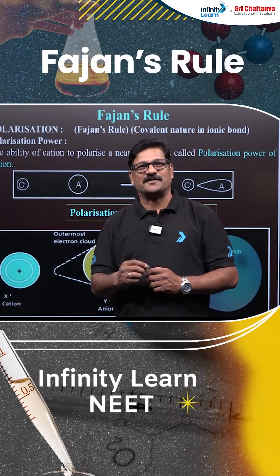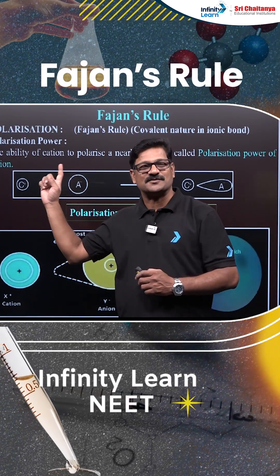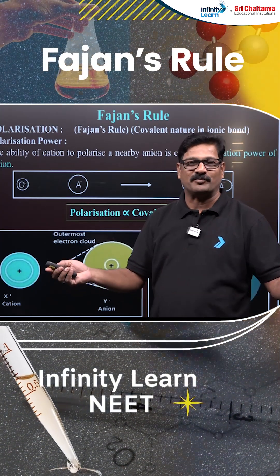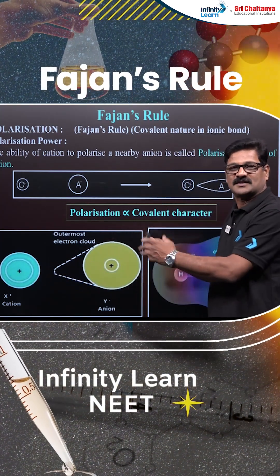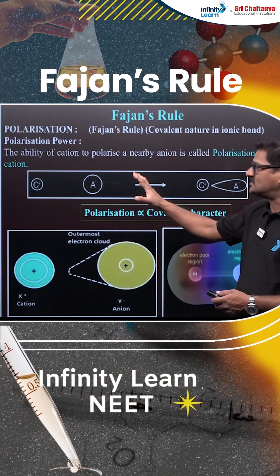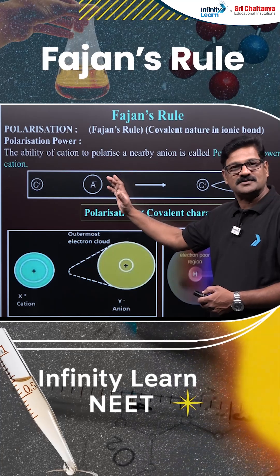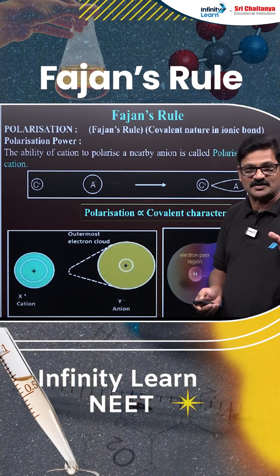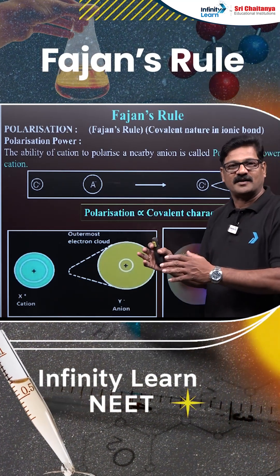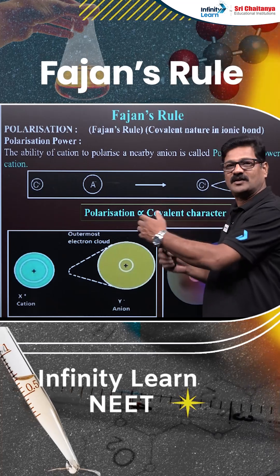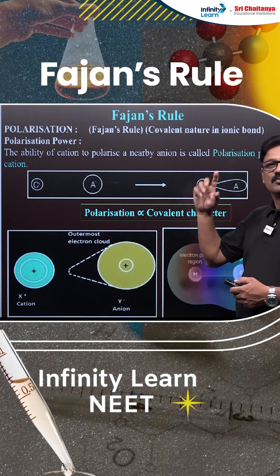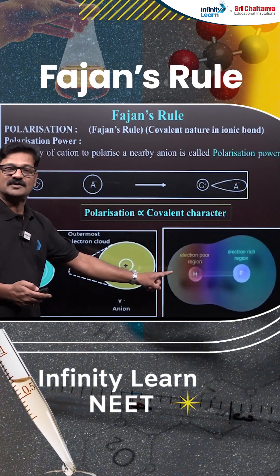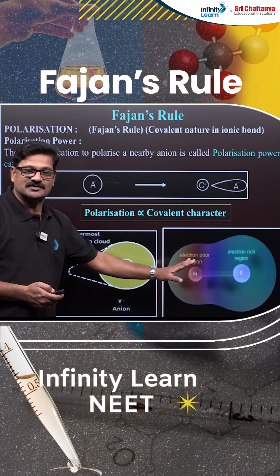Let us talk about Fajan's Rule. Fajan's Rule talks about the relative covalent properties of ionic compounds. It says that covalent nature is directly proportional to polarization. The deformation of an anion by a cation is called polarization — more polarization means more covalent nature.